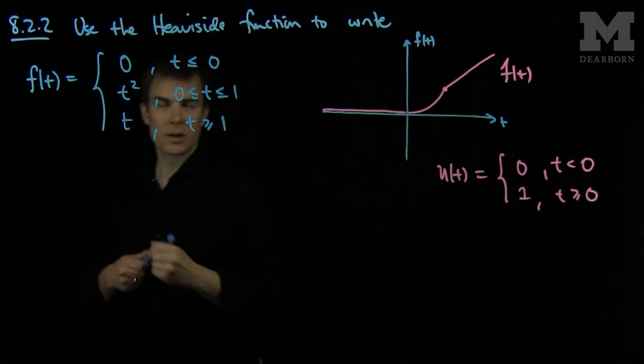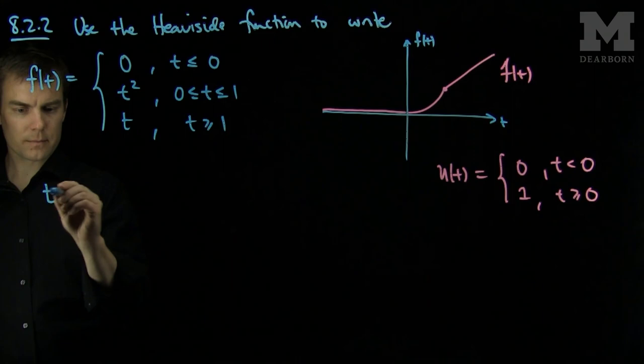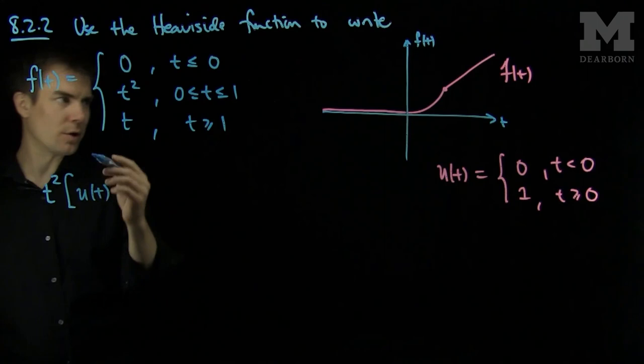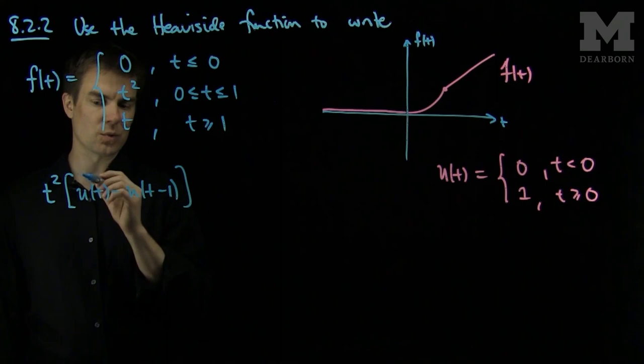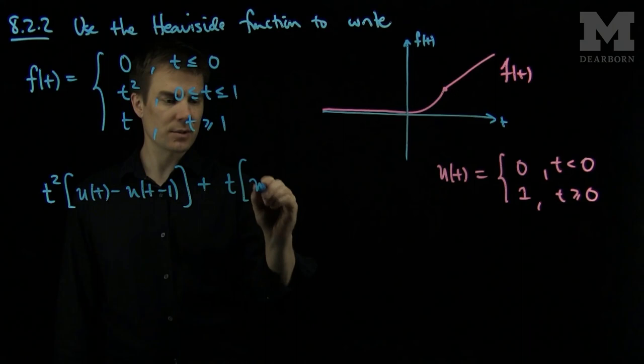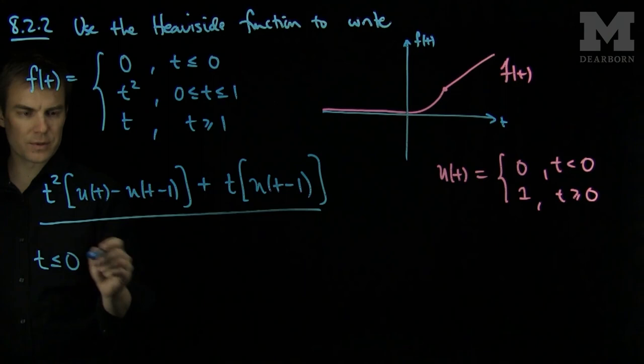So I can write this function in several parts. I can write this function as t squared, and then I will have a u of t which will turn it on, and I will subtract off a u of t minus 1 which will turn it off past 1. And then I will have a t which I will turn on past 1. And let's see how this expression turns back into what we have over here.